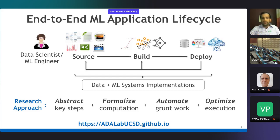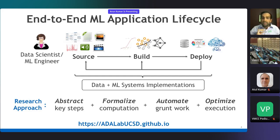This allows us to automate grunt work, reduce the amount of manual work needed, and offload more work to the system while maintaining the valuable inputs that data scientists can still provide. Because we have formalized the computation, we can use database and systems techniques to optimize the execution in the ML context. The AdaLab UCSD research group page lists all our research projects and papers—I invite you to take a look. In today's talk, I'll focus on a couple of them.